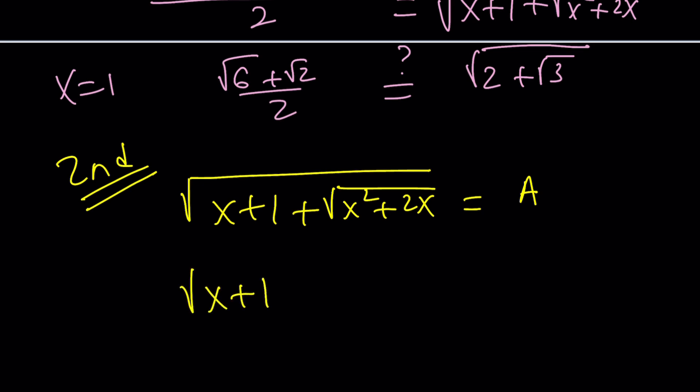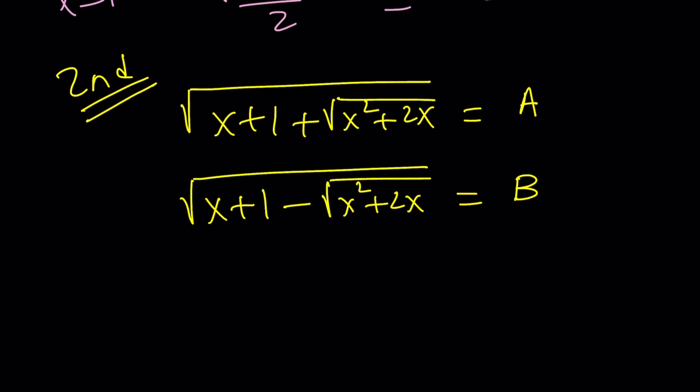And I'm going to call that capital A. And I'm going to write its friend, best friend, its conjugate. Okay? Not the complex conjugate, the radical conjugate. And I'm going to call that capital B. They usually use capital letters for this. It's just a convention. It doesn't matter. If you want to use something else, that's fine. But with A and B like this, I can do good things.